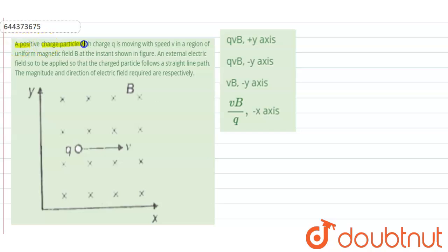A positive charge particle with charge q is moving with speed v in a region of uniform magnetic field B. At the instant shown in the figure, an external electric field is to be applied so that the charge particle follows a straight line path.